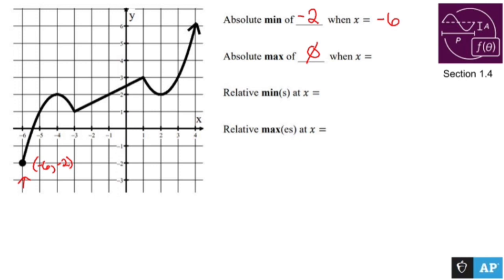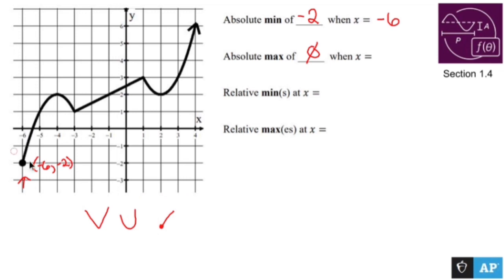A relative minimum exists at any point where you basically bottom out anywhere. So that is a relative minimum. We have several here — there's a relative minimum here because that's where it bottoms out, then it goes up, comes back down and bottoms out right there, goes up, comes back down, bottoms out right there.